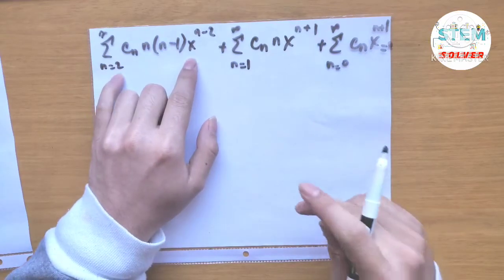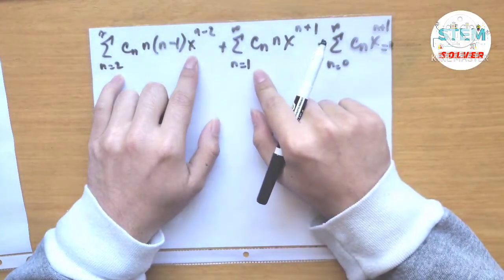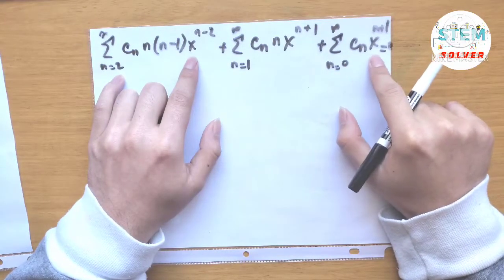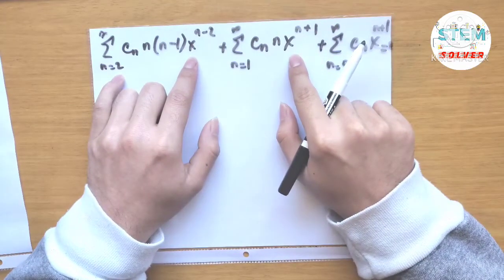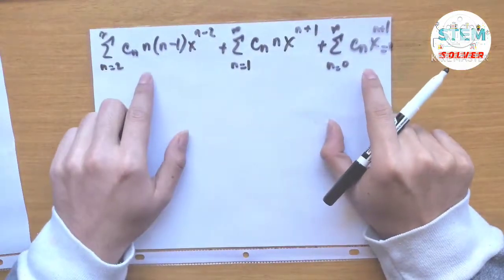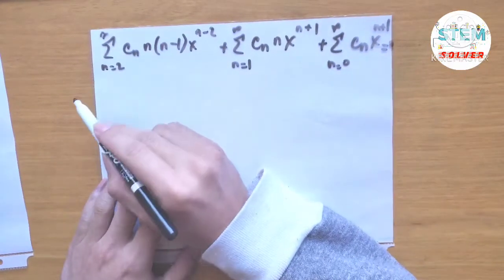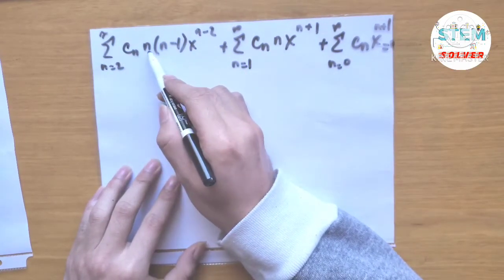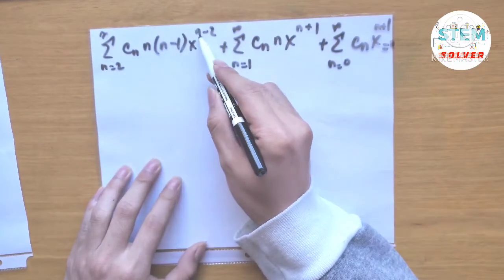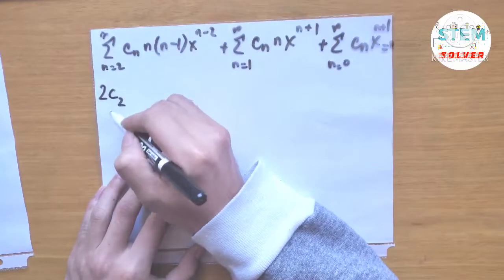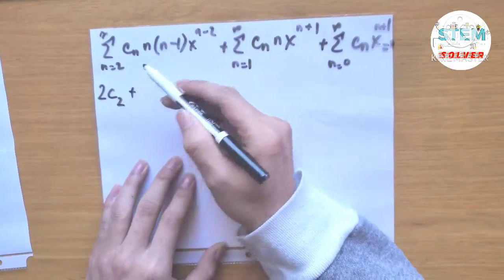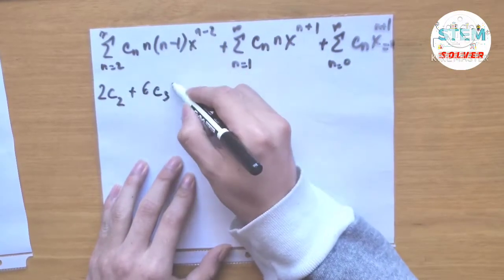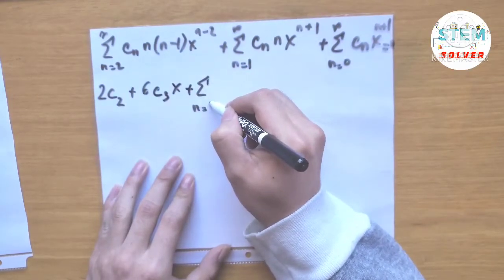Looking at the exponents: when n equals 2 we get x to the 0; when n equals 1 we get x squared; when n equals 0 we get x to the first. So x squared is the highest exponent. We run out terms for the first and last power series. For the first series, pulling out n equals 2 gives 2c_2 times 1 times x to the 0, and n equals 3 gives 6c_3 x, leaving the remaining sum from n equals 4 to infinity of c_n times n times n minus 1 times x to the n minus 2.